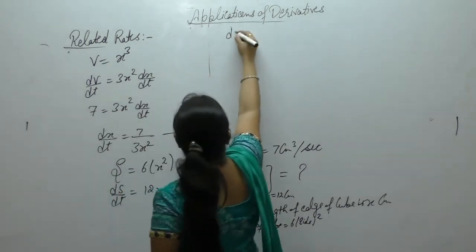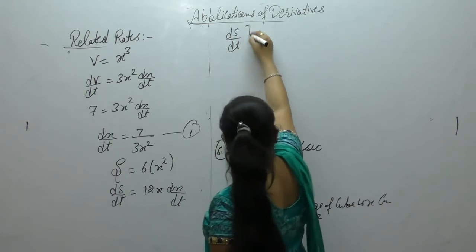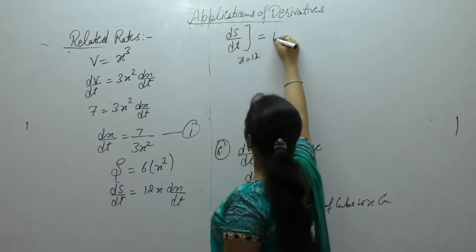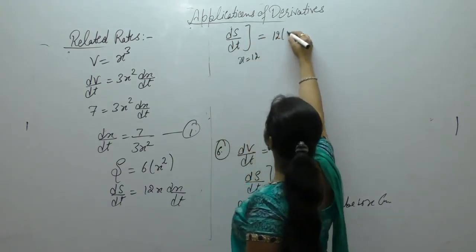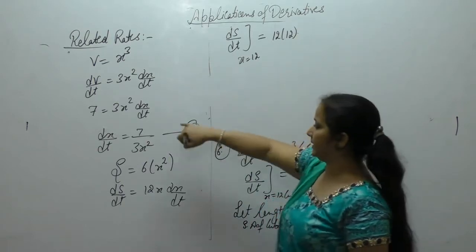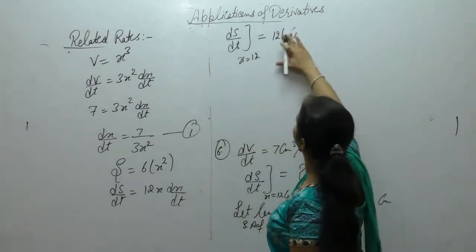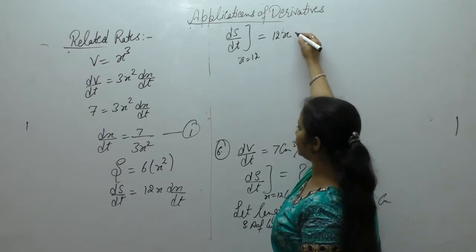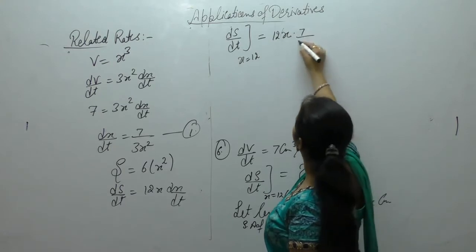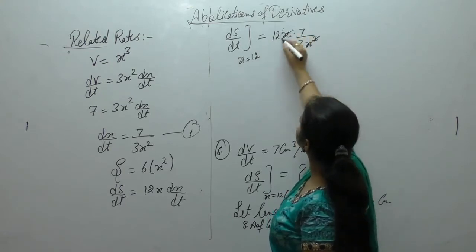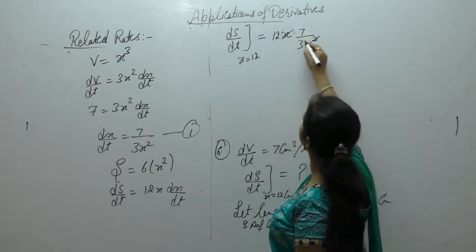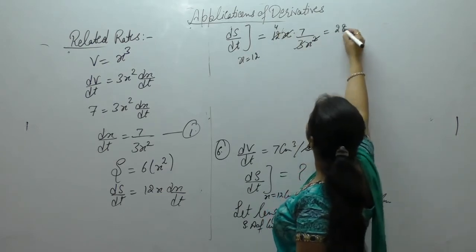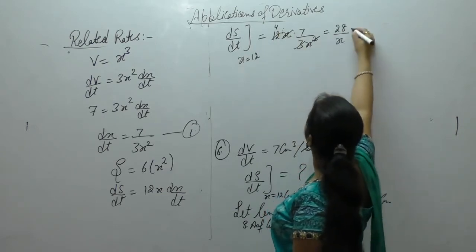So ds by dt when x is equal to 12: x is 12, dx upon dt. First write x as it is 12x. 3x square, 1x will cancel. 3 into 4, 7 into 4, 28 by x.